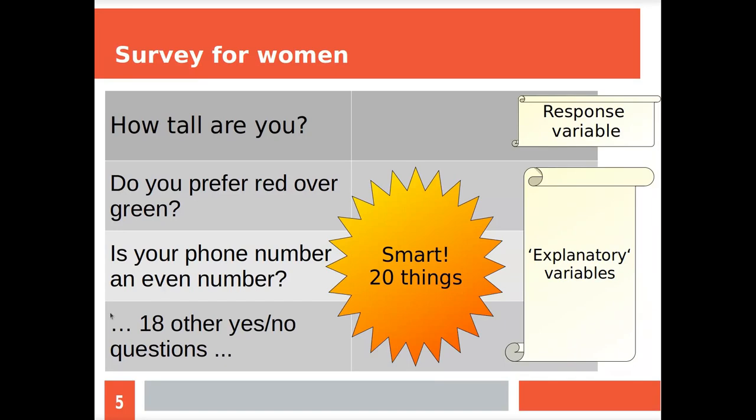He's going to do an experiment. He does a survey asking women how tall are you, and then he asks them 20 things in an attempt to explain what makes them so tall. For example, do you prefer red over green? Is your phone number an even number or an odd number? And 18 other things. All these explanatory values have no effect on height, just to make sure you understand. I just want a very explicit example.